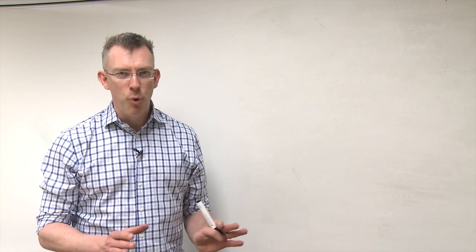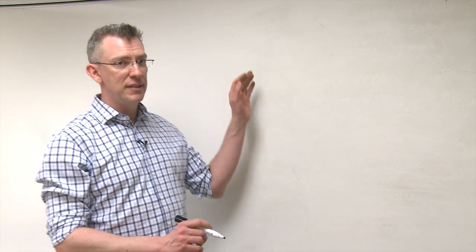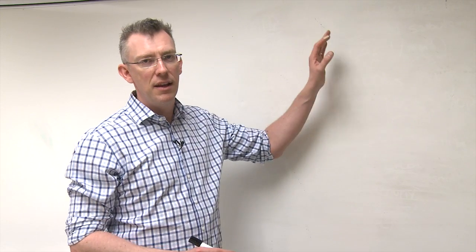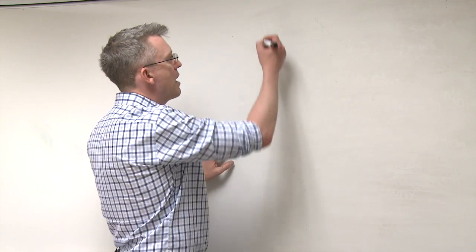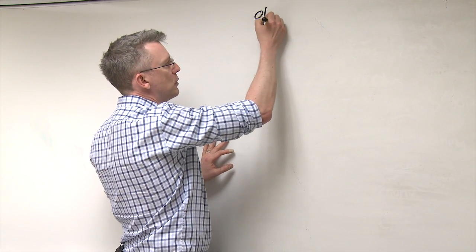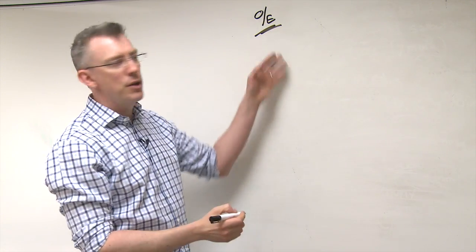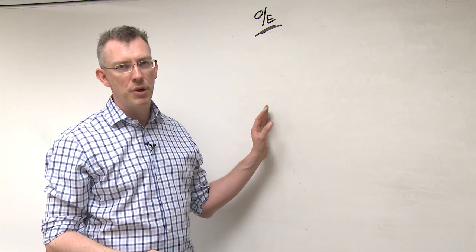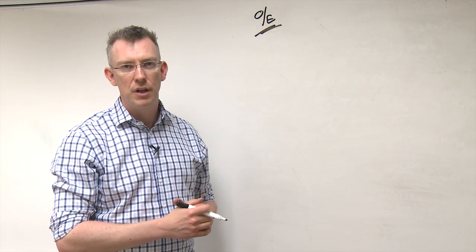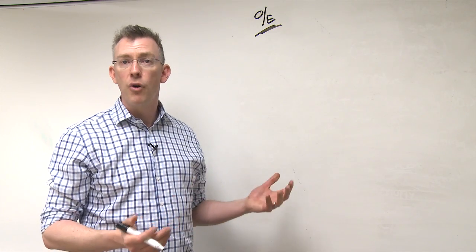We already talked about the importance of clarity and accuracy, and this holds true for the physical exam part as well. So usually what's good to do is give at least a space of line between the history and then the physical. And you can write on exam, or OE is pretty obvious, or you can write phys for physical. It could also be O for objective.